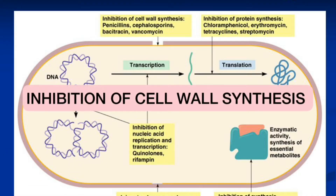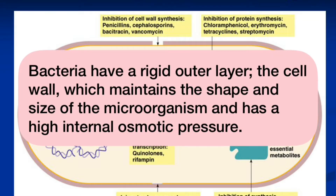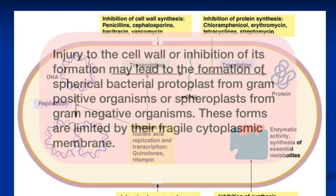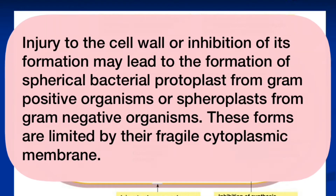Inhibition of Cell Wall Synthesis. Bacteria have a rigid outer layer — the cell wall — which maintains the shape and size of the microorganism and has a high internal osmotic pressure. Injury to the cell wall or inhibition of its formation may lead to the formation of spherical bacterial protoplasts from gram-positive organisms, or spheroblasts from gram-negative organisms. These forms are limited by their fragile cytoplasmic membrane.